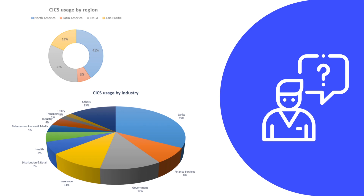Now let's look at CICS usage by industry. Looking at the graph, approximately 33% of banking applications are still using CICS, 8% are financial services applications, 12% are government applications, followed by insurance at 11% and retail at 6%. There is also usage in the health industry at approximately 5%, and other areas where CICS is heavily used for daily transactions.